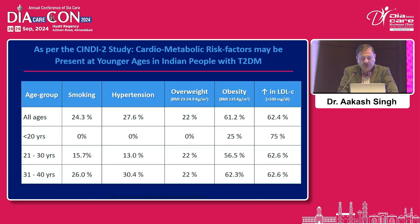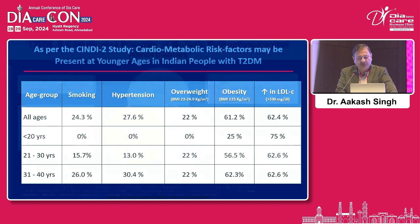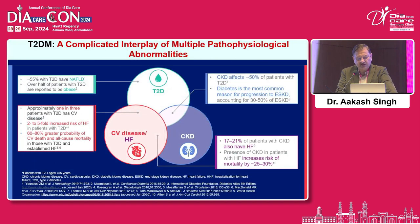82.5 percent appear to have at least one cholesterol abnormality, and 96.5 percent have lipid values above recommended targets. Even in younger populations, like those less than 20 years, obesity and increased LDL-C are more common. Smoking and hypertension and overweight are also very common in the population aged less than 40 years, and all of this confers excess risk.